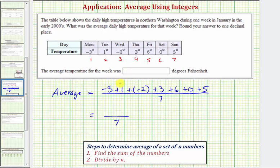So the average high temperature for this week is ten-sevenths degrees Fahrenheit. But we are asked to round to one decimal place. So now we'll convert our fraction to a decimal. A fraction bar represents division. This is equivalent to ten divided by seven.